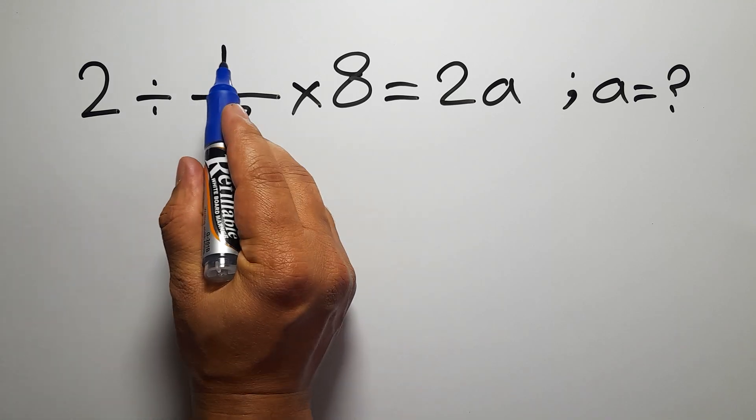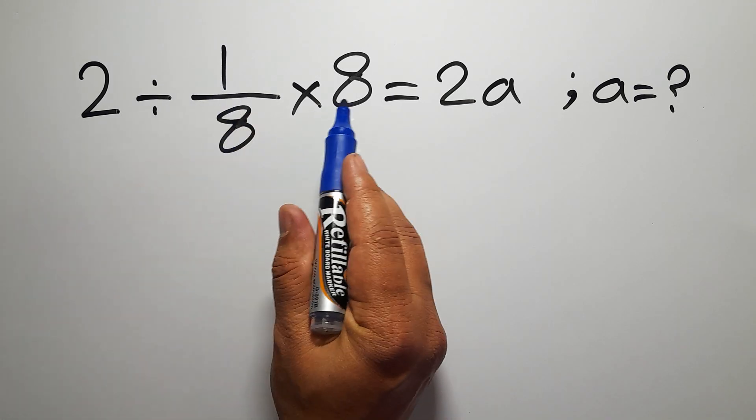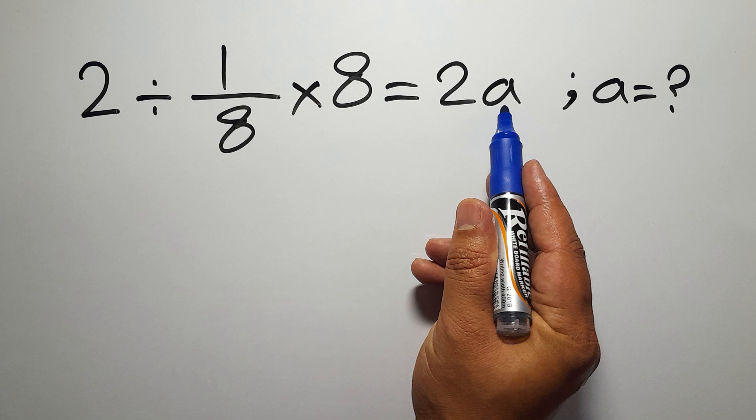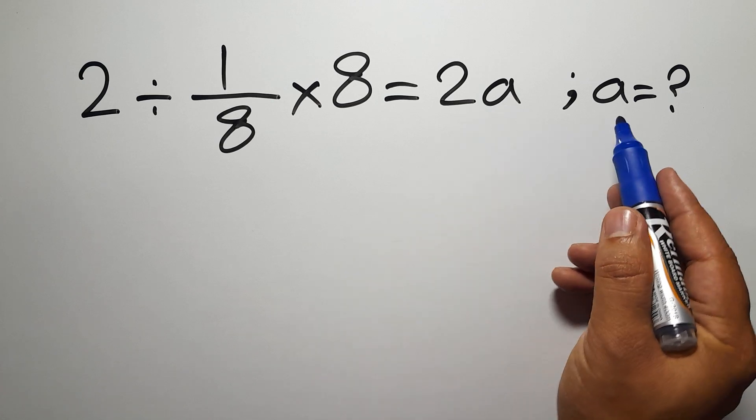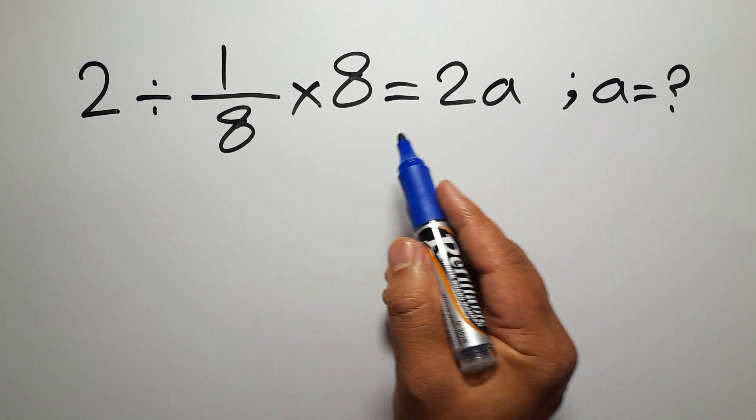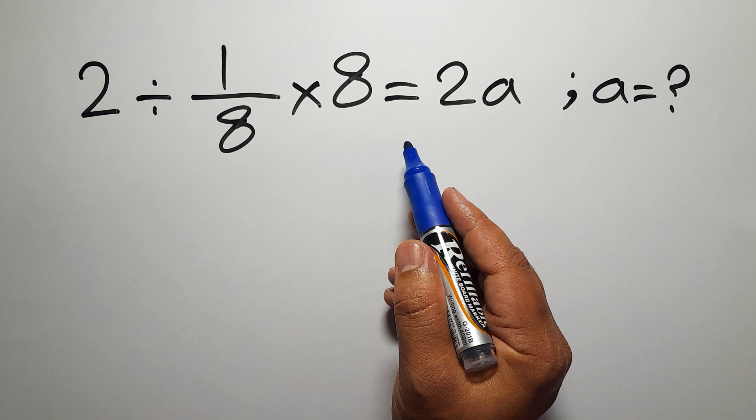2 divided by 1 over 8 times 8 equals 2a. Our goal is to find the value of a. Are you ready to solve? Let's go ahead and get started.